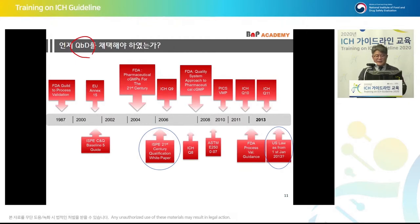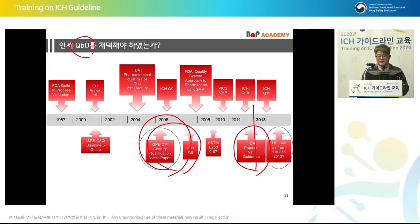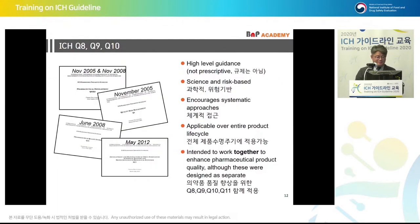When was the first time QBD was adopted? In 2006, ICH Q9 was introduced, and Q8 was being adopted during the same period. In 2013, FDA's process validation guidance was reviewed and most of the QBD concept was introduced in Stage 1 of process validation. I believe 2013 is the starting point of the adoption of QBD — this is my personal opinion.